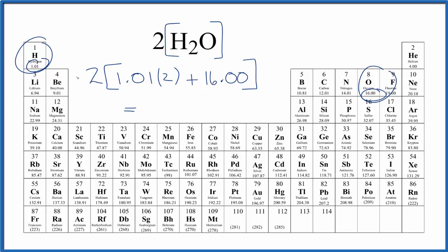We multiply that by two, we get 36.04 and the units grams per mole. So if you're asked to find the molar mass of 2H2O, this is how you do it.